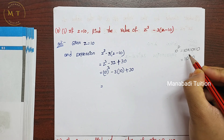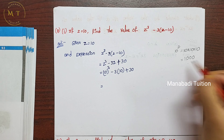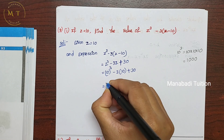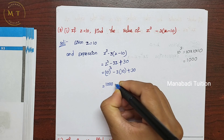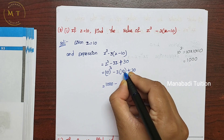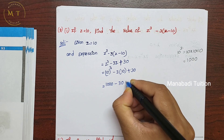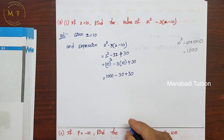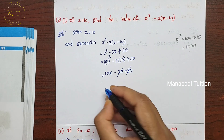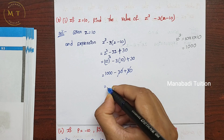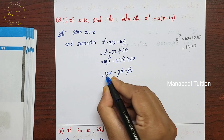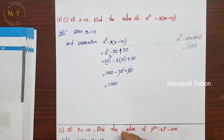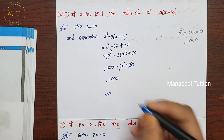So 10 cube value is 1000. Write 3 times 10 is 30, next plus 30. So write plus 30 and minus 30. If you cancel them, then subtract — result is 0. That's it.